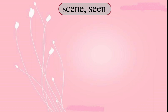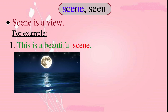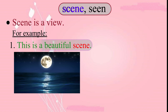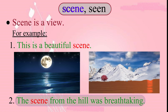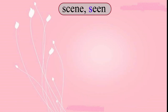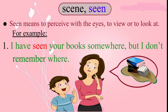Have a look at these two words. S-C-E-N-E 'scene' and S-double-E-N is also pronounced as 'seen'. 'Scene' is a view. For example: 'This is a beautiful scene.' 'The scene from the hill was breathtaking.' S-double-E-N 'seen' means to perceive with the eyes, to view or to look at. For example: 'I have seen your book somewhere but I don't remember where.'